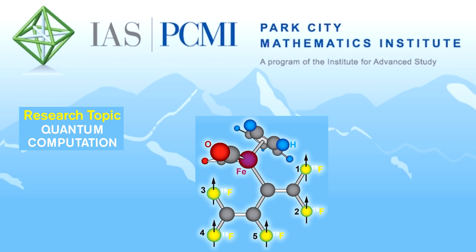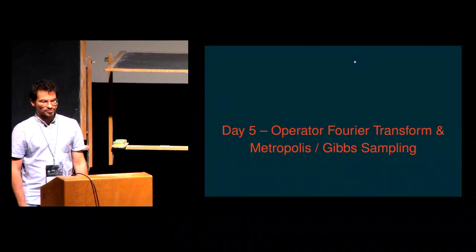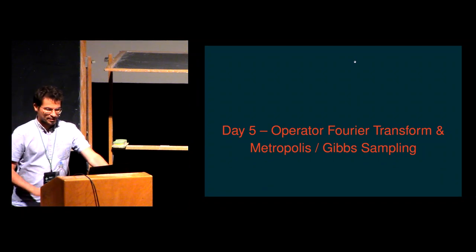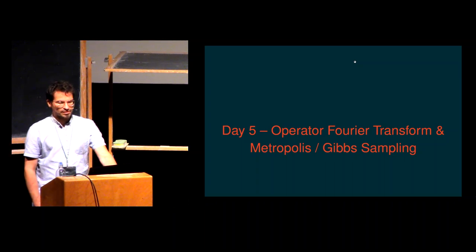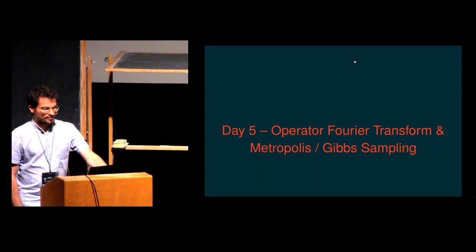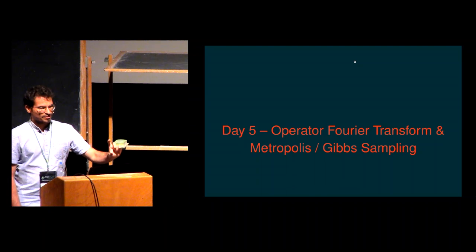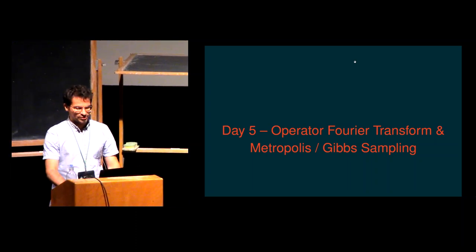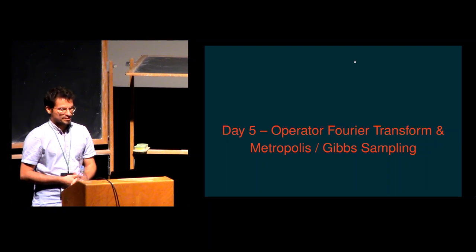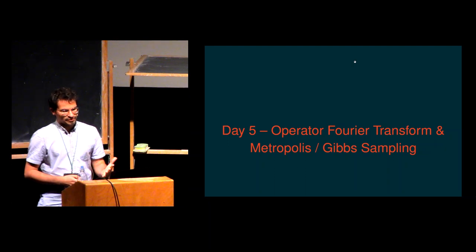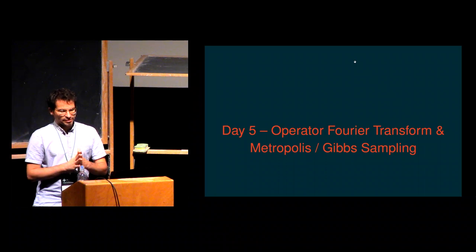This is the final talk about the quantum Fourier transform beyond Shor's algorithm. Today I will talk about operator Fourier transform and metropolis and Gibbs sampling. The operator Fourier transform may be a bit foreign if you don't come from the metropolis algorithm perspective, so I'll first explain why and how we want to apply it. Without motivation it may be difficult to understand why we care about such an operation. In advance, I can say that operator Fourier transform is sort of the operator analog of phase estimation.